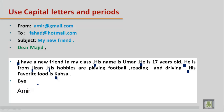Period means full stop. When you complete a sentence, we use a period. 'I have a new friend in my class.' Full stop. 'His name is Umar.' Full stop. Periods and full stop mean the same thing. 'He is 17 years old.' Full stop. 'He is from Jisan.' Full stop. 'His hobbies are playing football, reading, and driving.' Full stop. 'And his favorite food is kapsa.' Periods end every sentence.